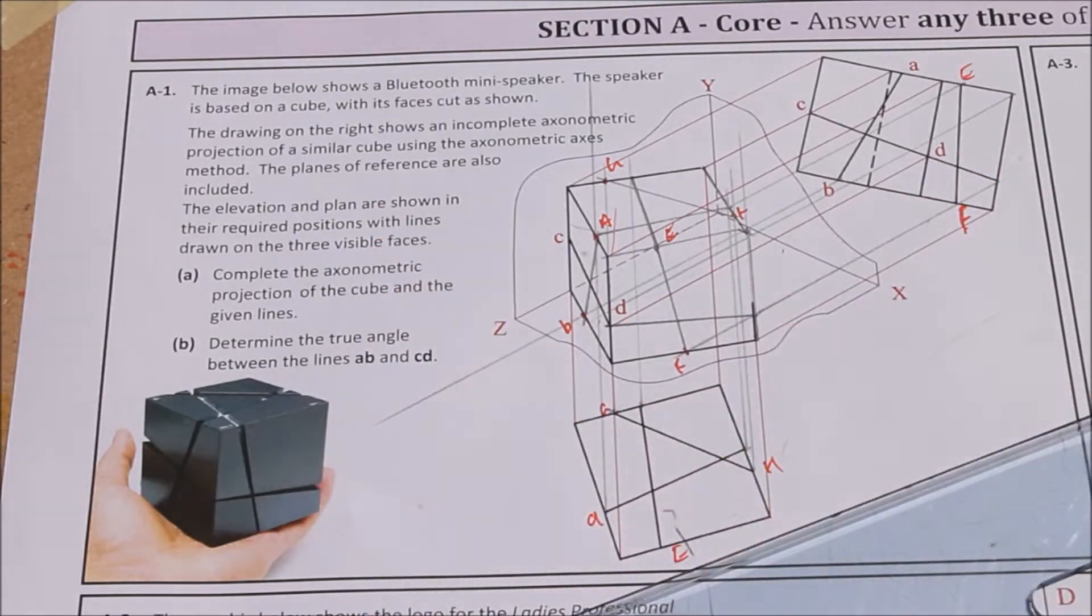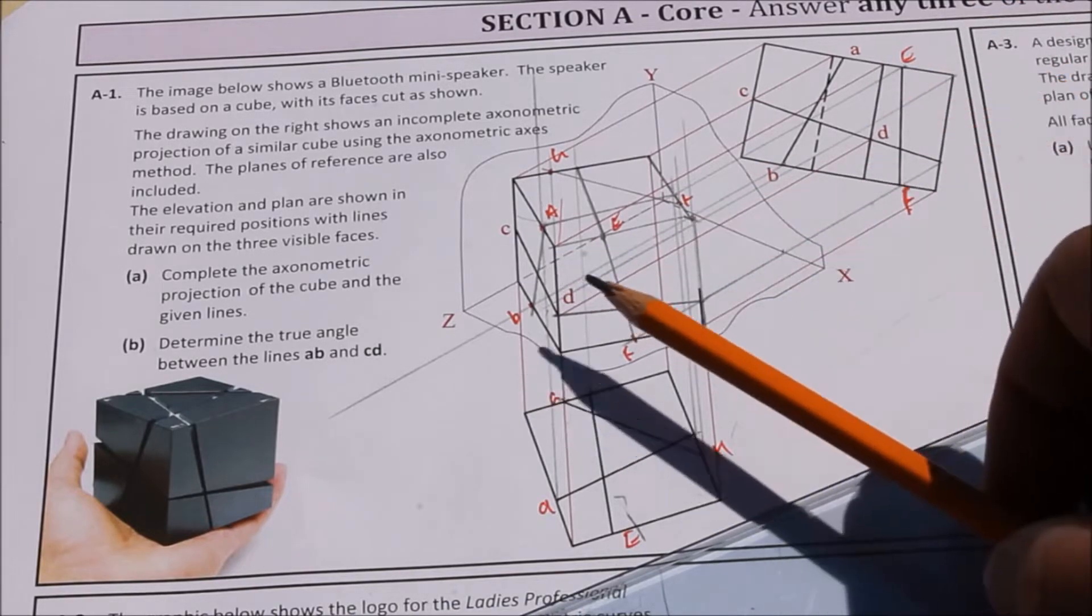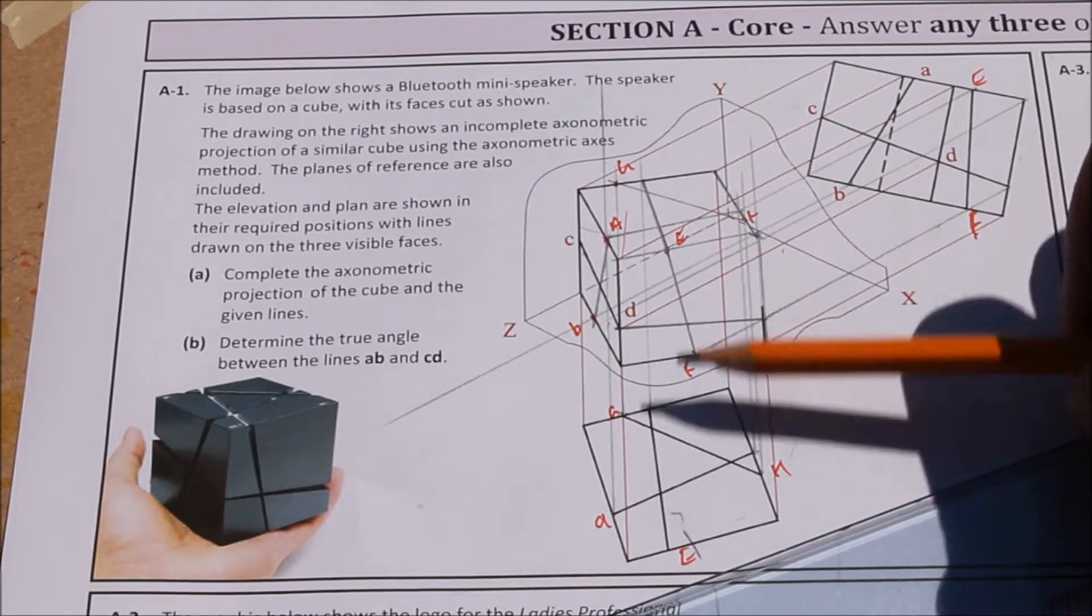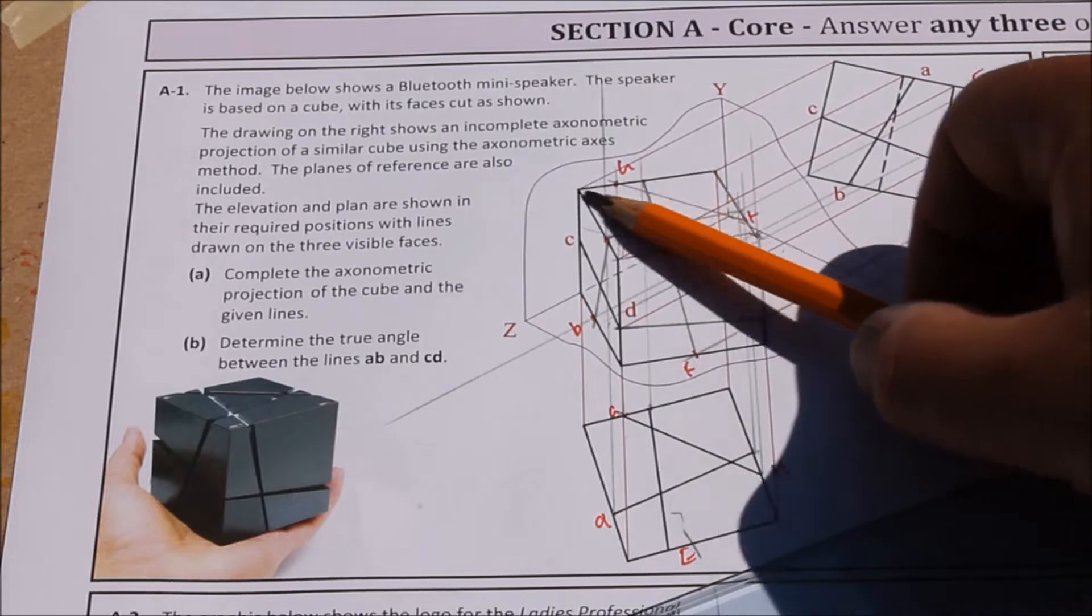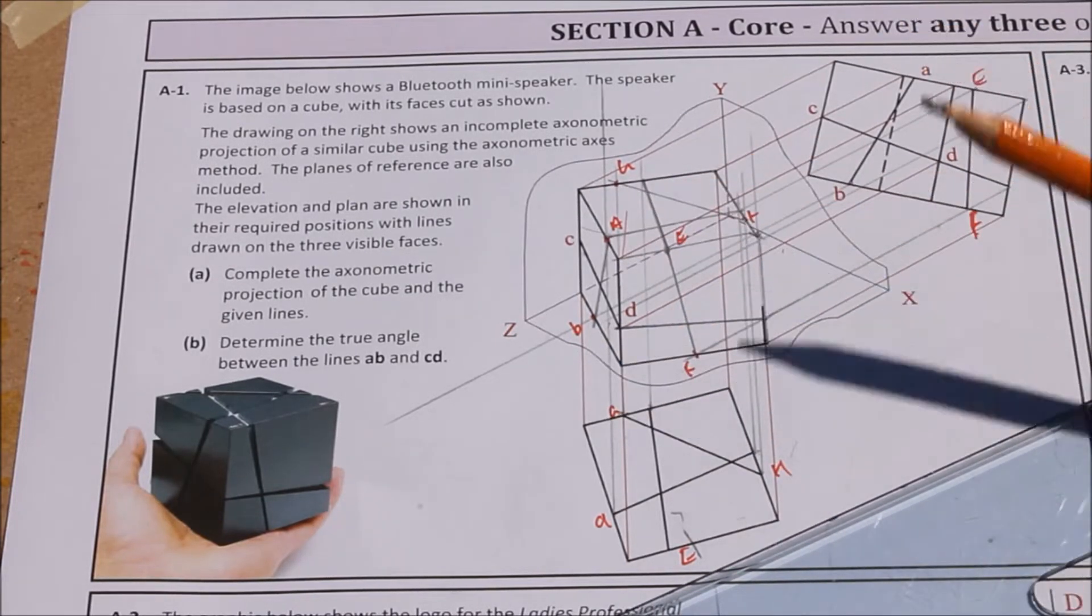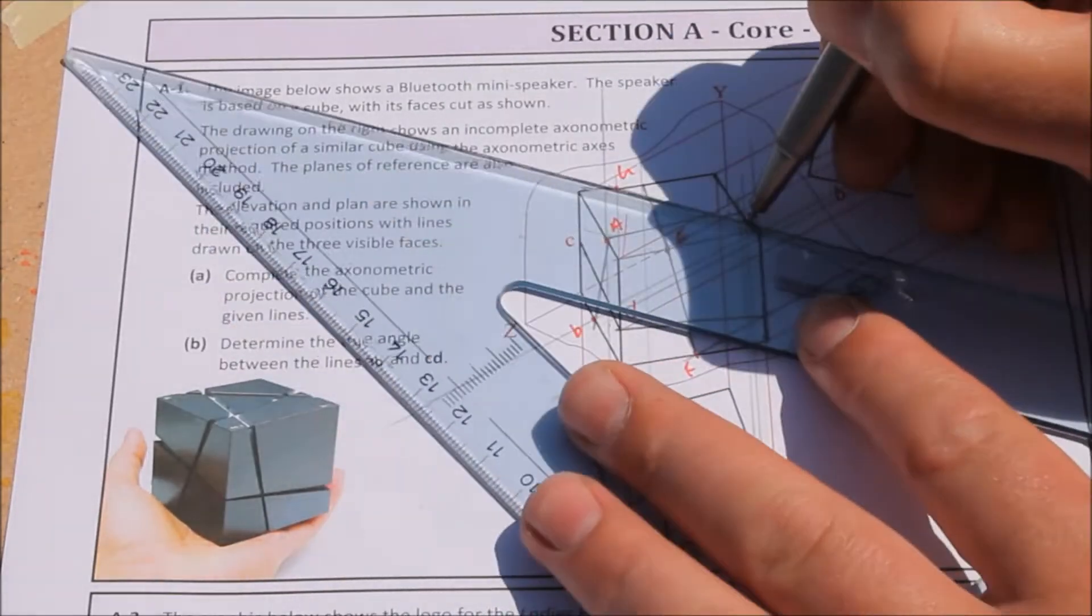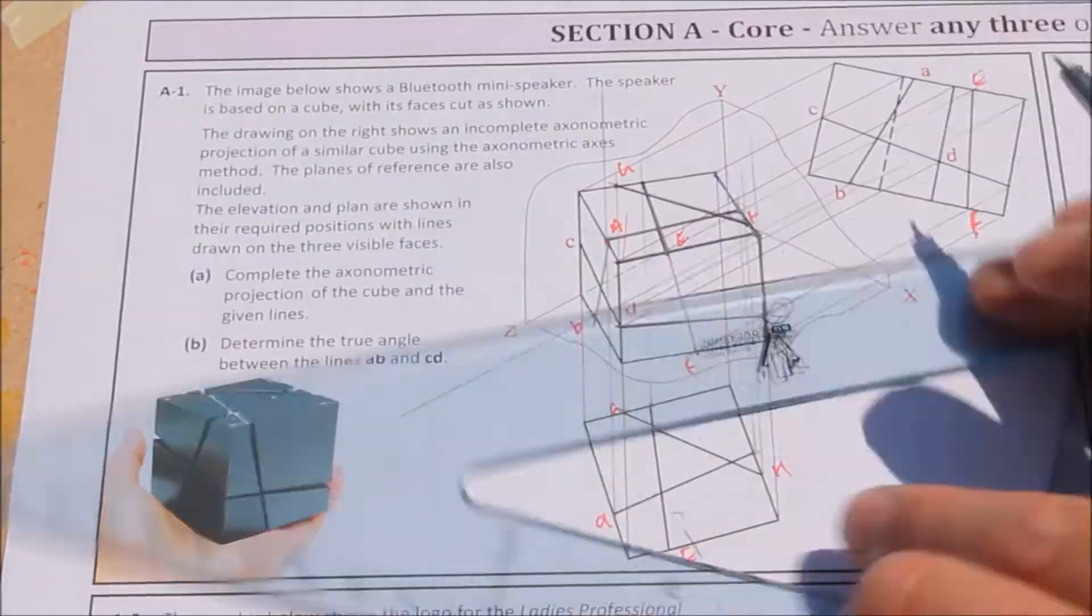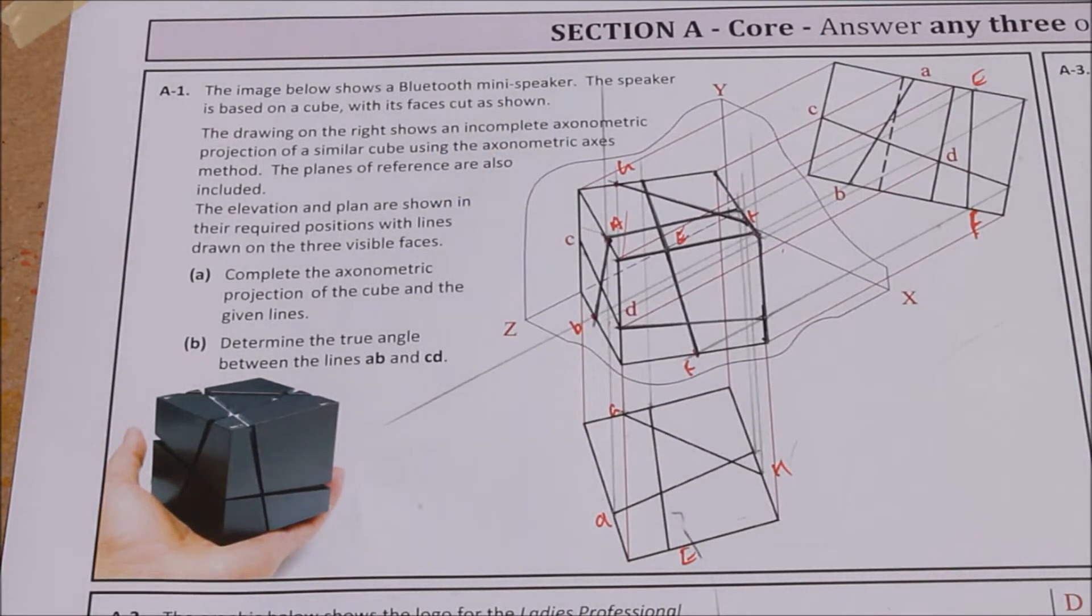So part A, complete the axonometric projection of the cube and the given line. So we've completed the cube, just projecting 30 degrees from the end view here, projecting straight up from the plan. And the next thing you've got to do then is find your line. So we're crossing certain lines here, like G was crossing at the back there. We found that over here at the back, and so on. So what I'm going to do is just draw them in strong now, and then we'll focus on B. So that is part A done.